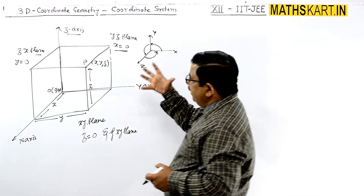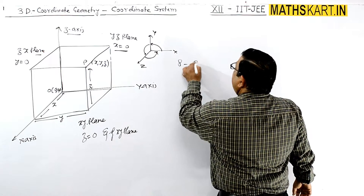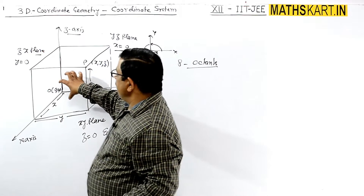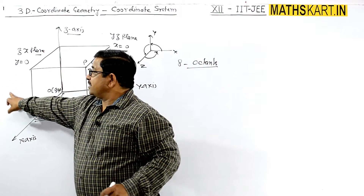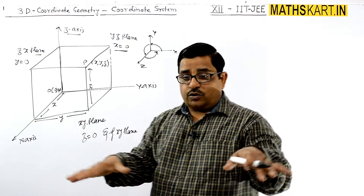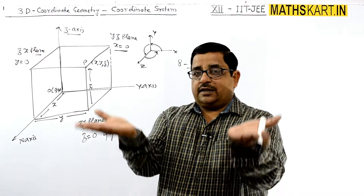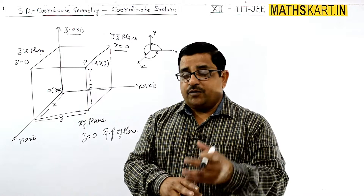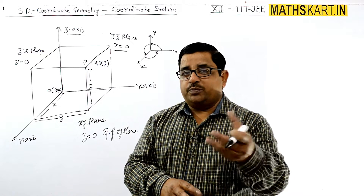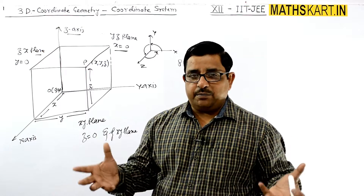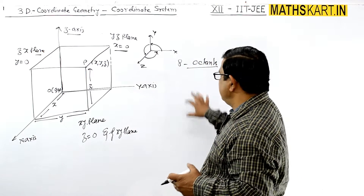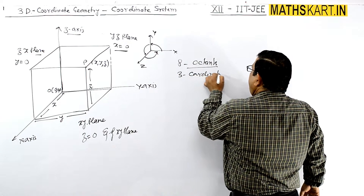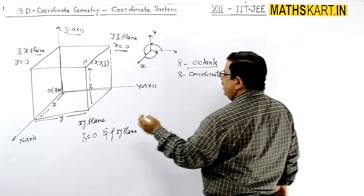There are 8 octants total — one of each octant. There are four rooms above and four below, making 8 octants total. Any point in space will fall in one of these 8 octants. And there are three coordinate axes.